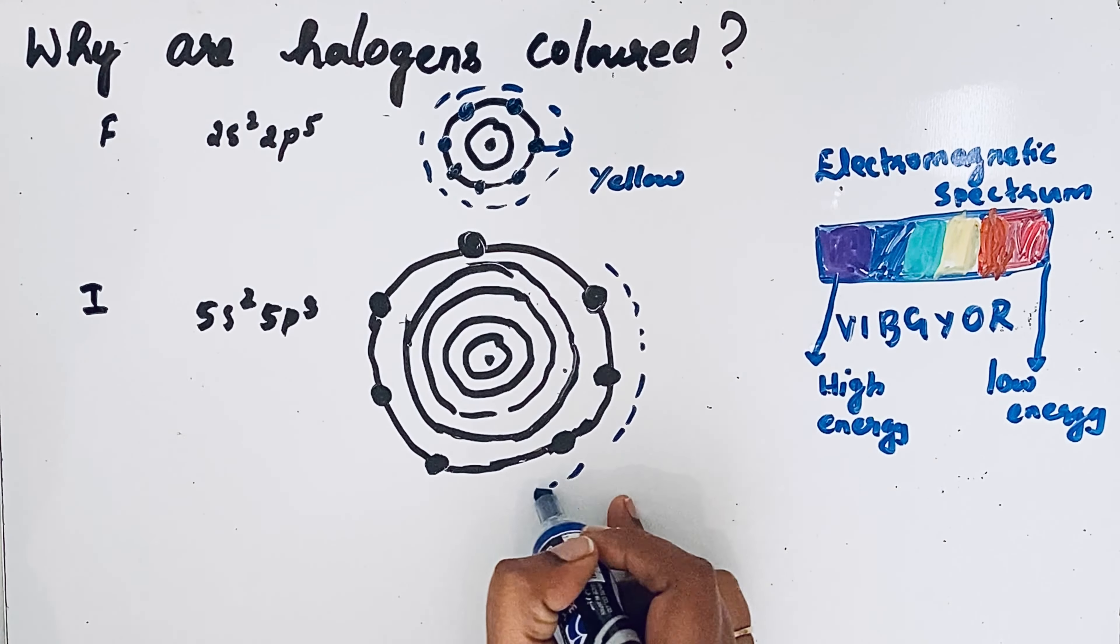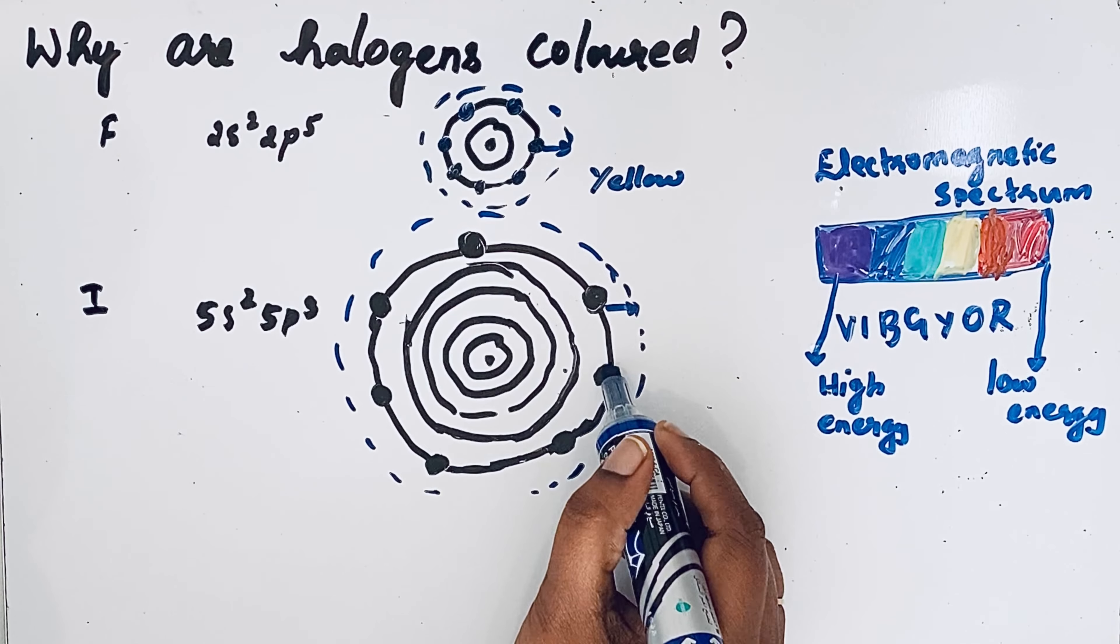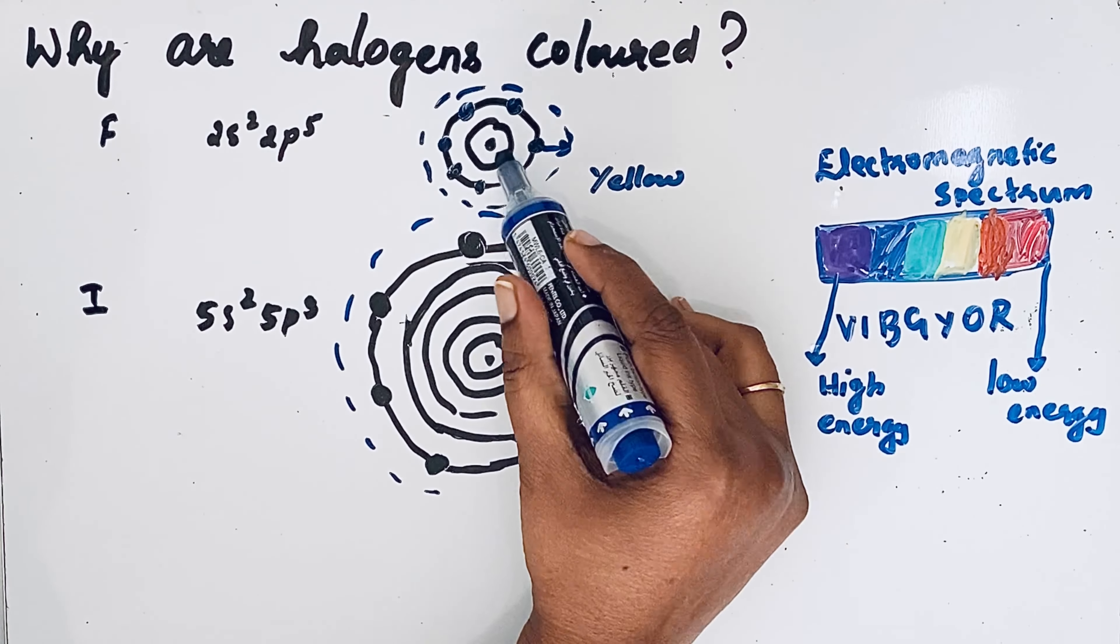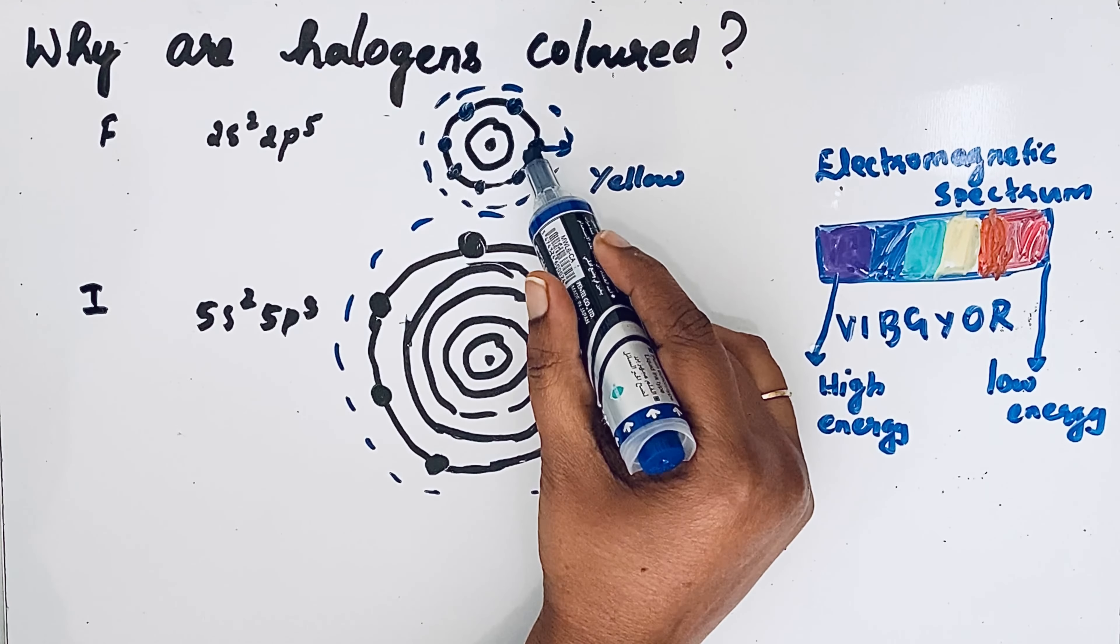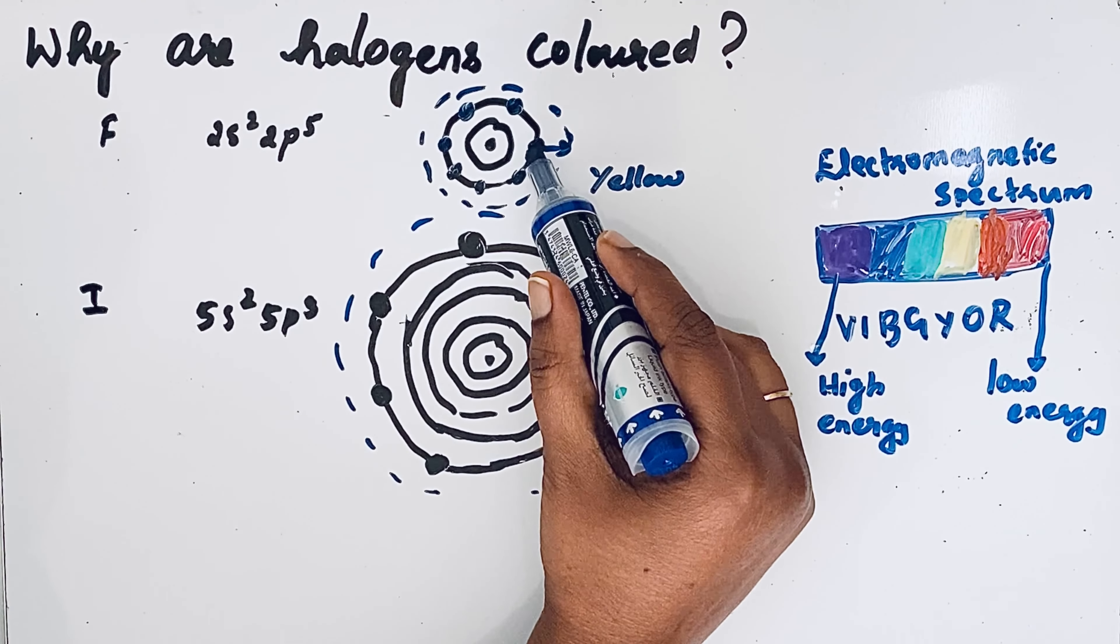But this is an unstable stage, so immediately they will try to come to the original position. At that time, they emit light. You can see that the distance between the nucleus and the valence electron is greater compared to fluorine, because in fluorine the valence electrons are present in the second orbit, but here they are in the fifth orbit. So this distance is greater.